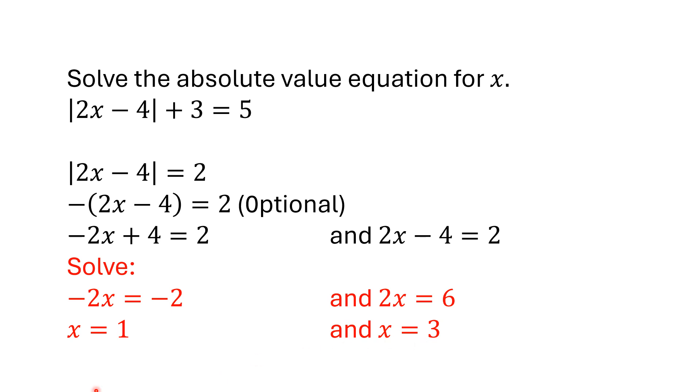And again, feel free to go back and check and make sure it works. In the first case, 2 minus 4 is -2. The absolute value of -2 is 2, and it works.